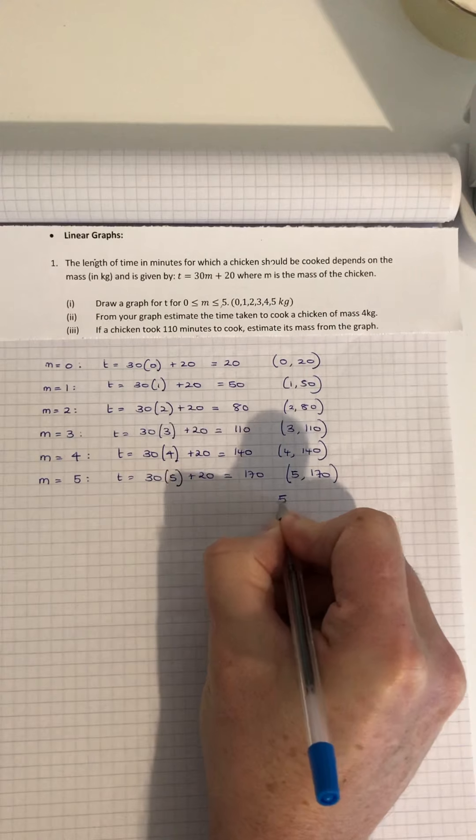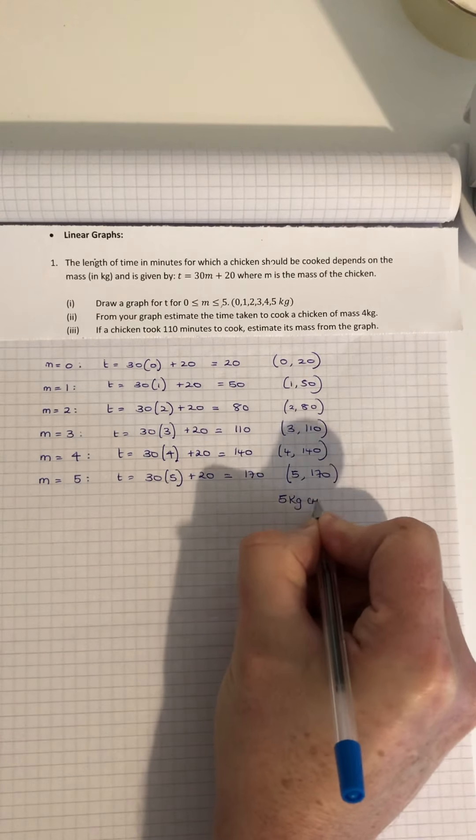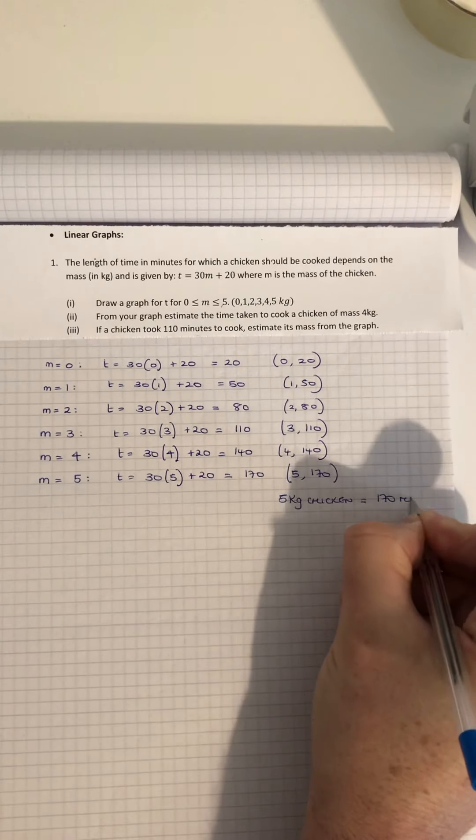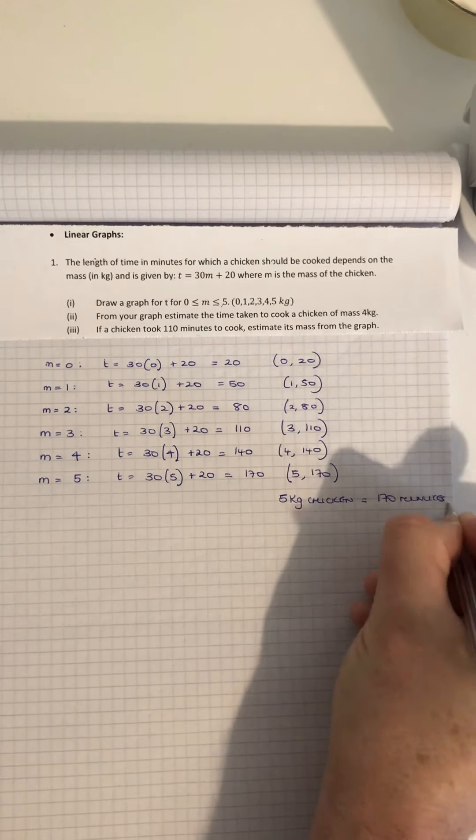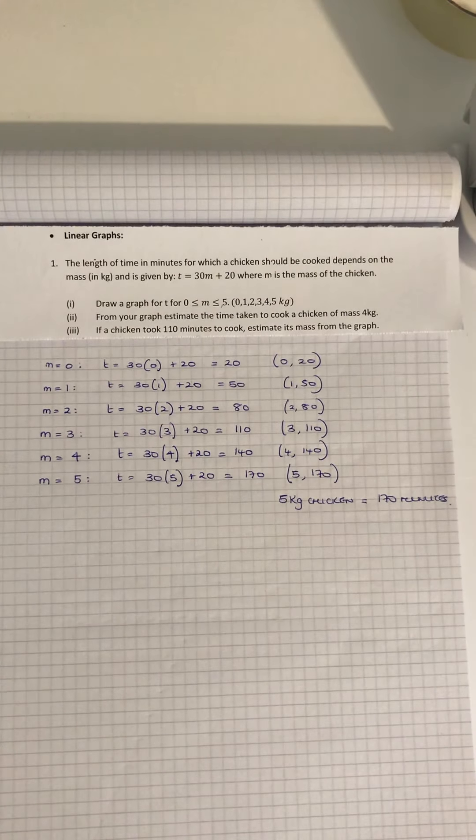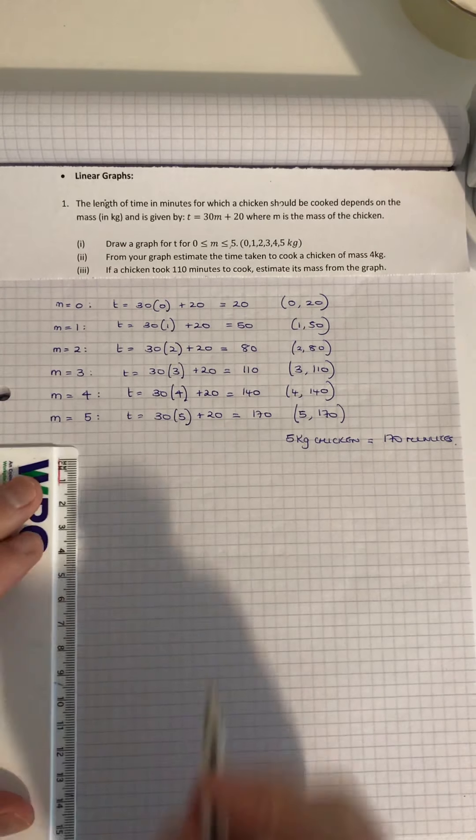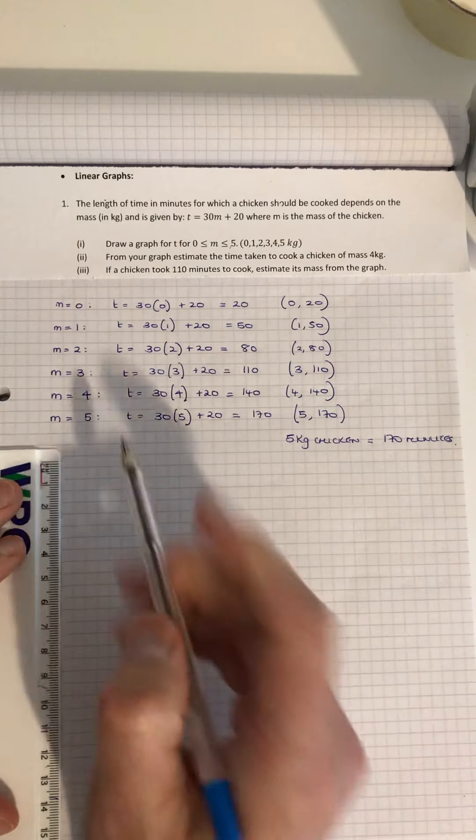We're going to draw the graph. We need to get up as far as 170, so something like this. I'm going to start at 0, 1 kg, 2 kg, 3 kg, 4 kg, 5 kg.